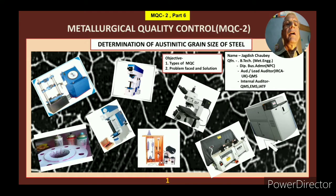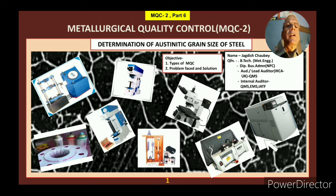Hello friends. In Metallurgical Quality Control Series 2, Part 6, I welcome all of you on my channel Jagdish Shaube. This video is on the determination of austenite grain size of steel. This austenite grain size plays a very important role in deciding steel properties as well as the heat treatment process. Let's move.